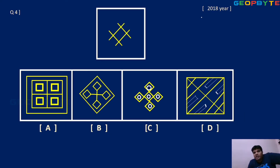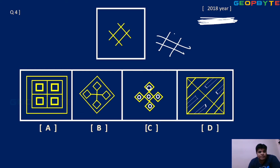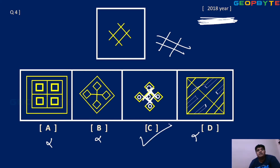Next question: the figure shows two intersecting lines. In option A, not possible. Option B, not possible. Option D — two intersecting lines — not existing. Come to option C: observe the white color — one line, two lines — these lines are satisfied. So option C is the right answer.